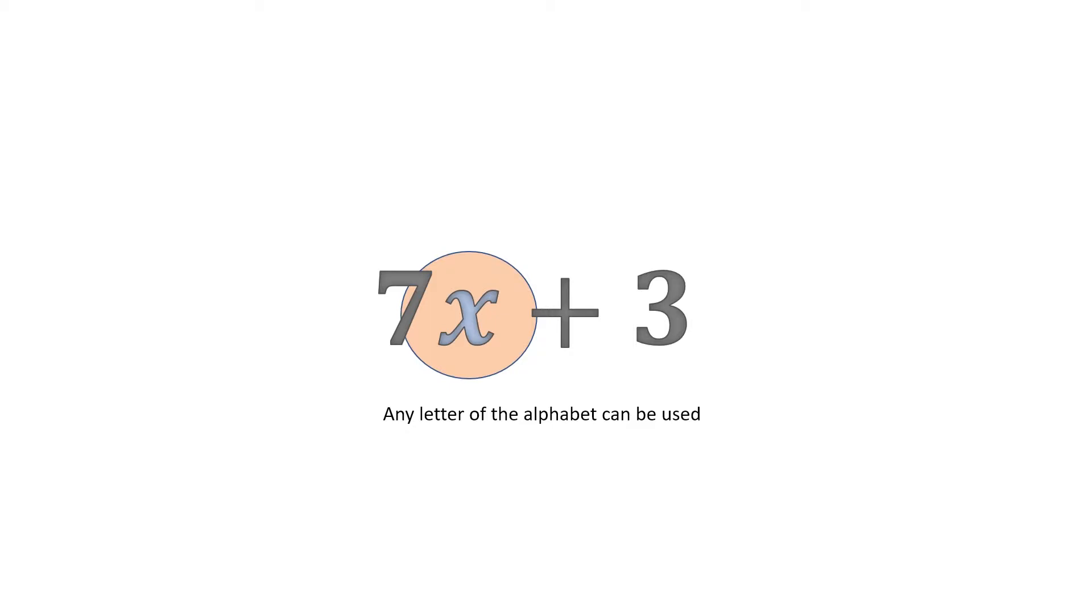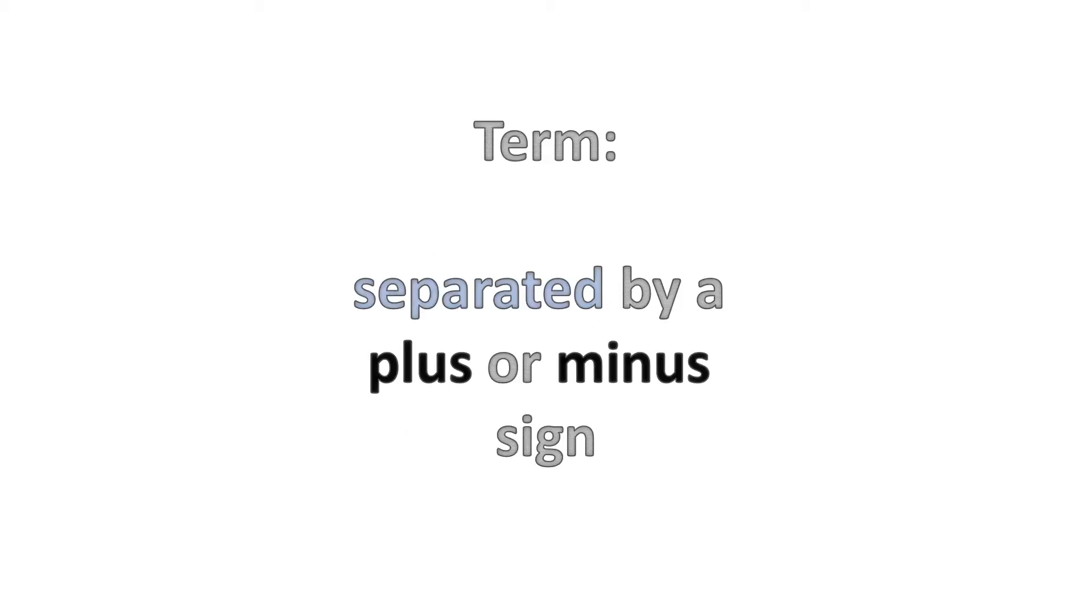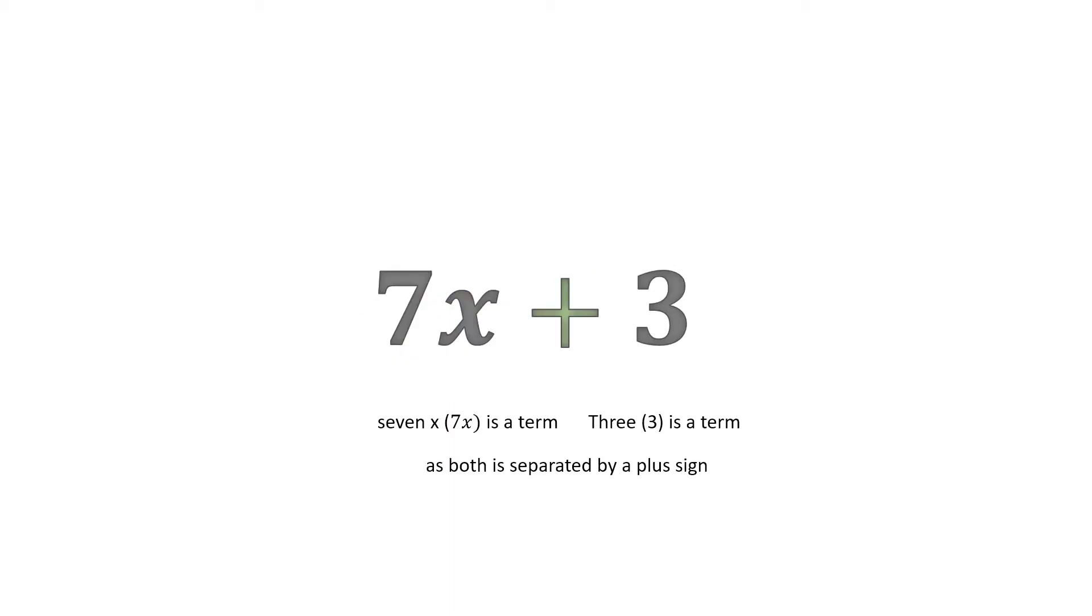Next we have the definition of a term. A term is separated by a plus or minus sign. This is very important. If we have a look at 7x plus 3 again, we'll see that 7x is a term, and that 3 is a term, because they are both separated by, in this case, a plus sign, or an addition sign.